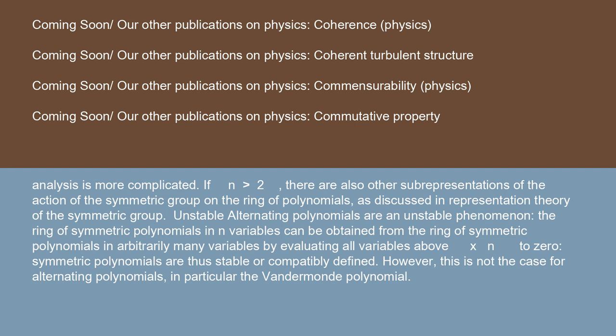Unstable: alternating polynomials are an unstable phenomenon. The ring of symmetric polynomials in n variables can be obtained from the ring of symmetric polynomials in arbitrarily many variables by evaluating all variables above x_n to 0. Symmetric polynomials are thus stable, or compatibly defined. However, this is not the case for alternating polynomials, in particular the Vandermonde polynomial.